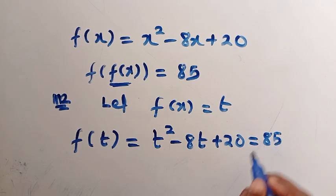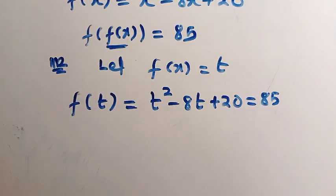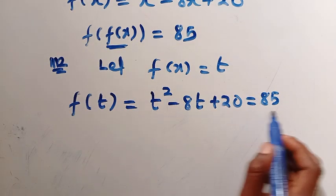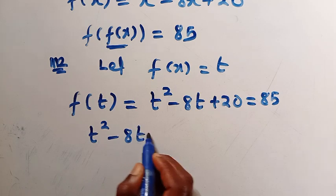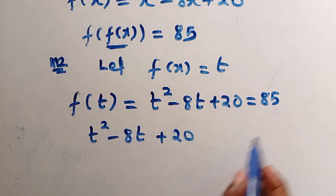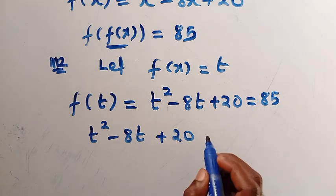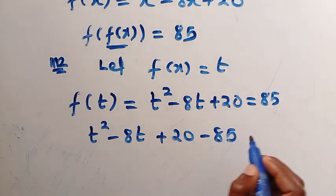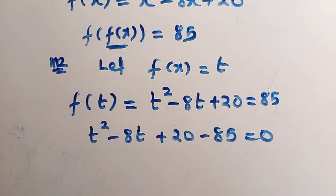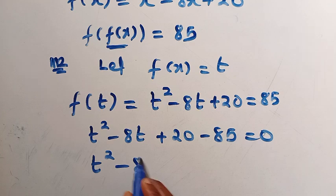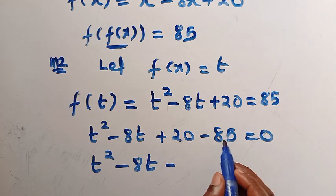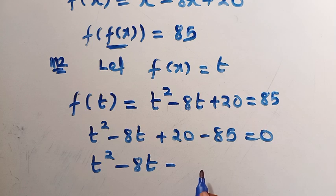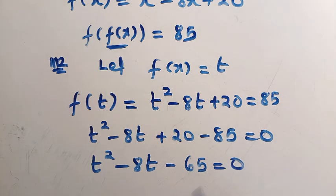Setting f of t equal to 85, we have t squared minus 8t plus 20 equals 85. Transferring 85 to the other side gives t squared minus 8t plus 20 minus 85 equals 0, which simplifies to t squared minus 8t minus 65 equals 0. We now solve this quadratically.